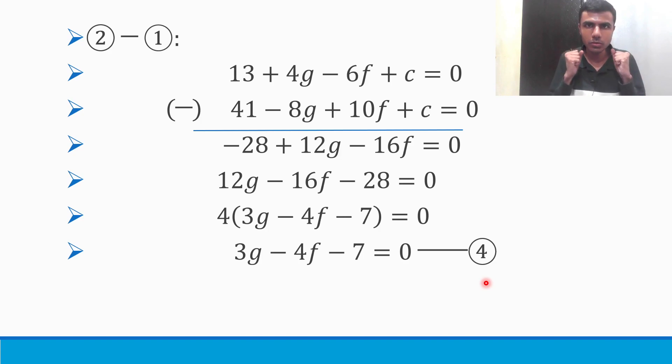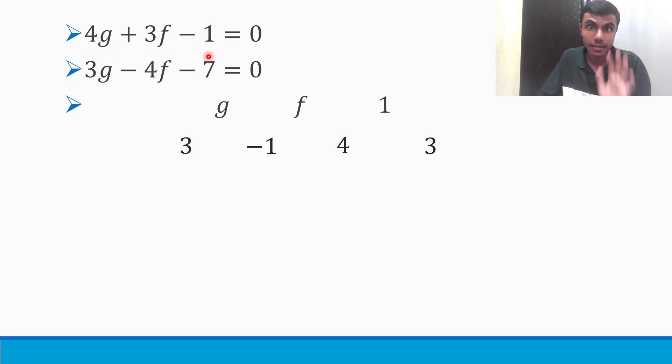Now we are going to solve equation 3 and equation 4. These are my equation 3 and equation 4. I just wrote them once again. You could use elimination method, you could use substitution method, or you can use the method which I am using. In my method, something like cross-rule I am going to do. First, you need to start by writing the coefficient of f. Here in the first equation, what is coefficient of f? 3. So first 3 will come here. Then -1. We need to go in cycle: 4, then 3.